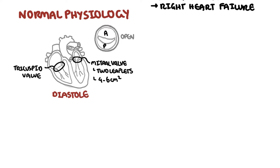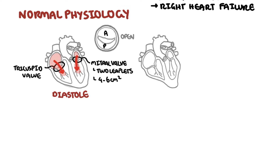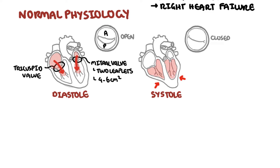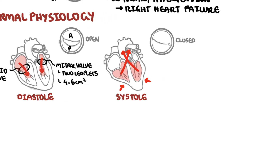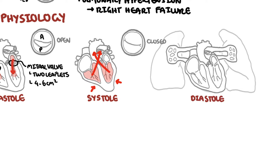During diastole, which is when the ventricles fill, the atrioventricular valves are open, allowing blood to flow from the atria to the ventricle. During ventricular systole, the mitral valve closes, allowing blood to be ejected from the aorta into circulation. Normal cardiac pressures: within the aorta, blood pressure is about 120/80 mmHg, and the left atrial pressure is 6 mmHg.